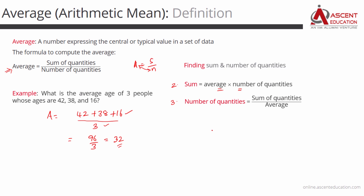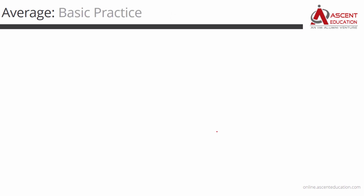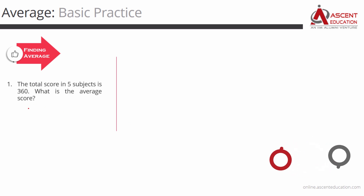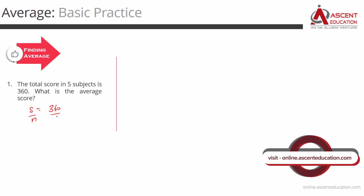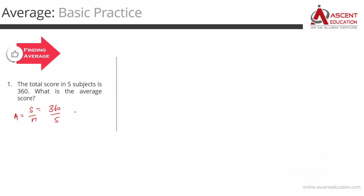Let's take three examples to consolidate these three variants. The first example — we'll find out the average. The total score in five subjects is 360, so sum equals 360. There are five subjects, so 360 divided by 5 gives us the average, which is equal to 72.